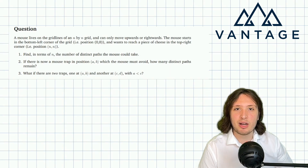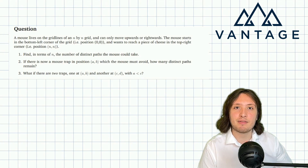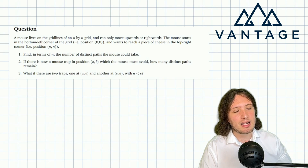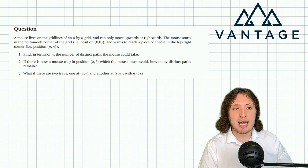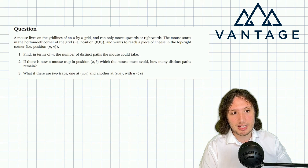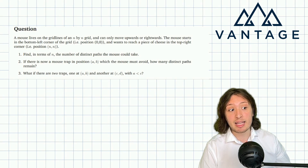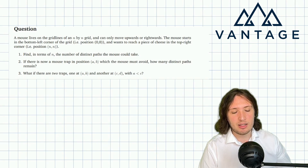In this video we're going to work through a question from our 2024 interview question bank for computer science. A mouse lives on the grid lines of an n by n grid and can only move upwards or rightwards. The mouse starts in the bottom left corner, position (0,0), and wants to reach a piece of cheese in the top right corner, position (n,n).